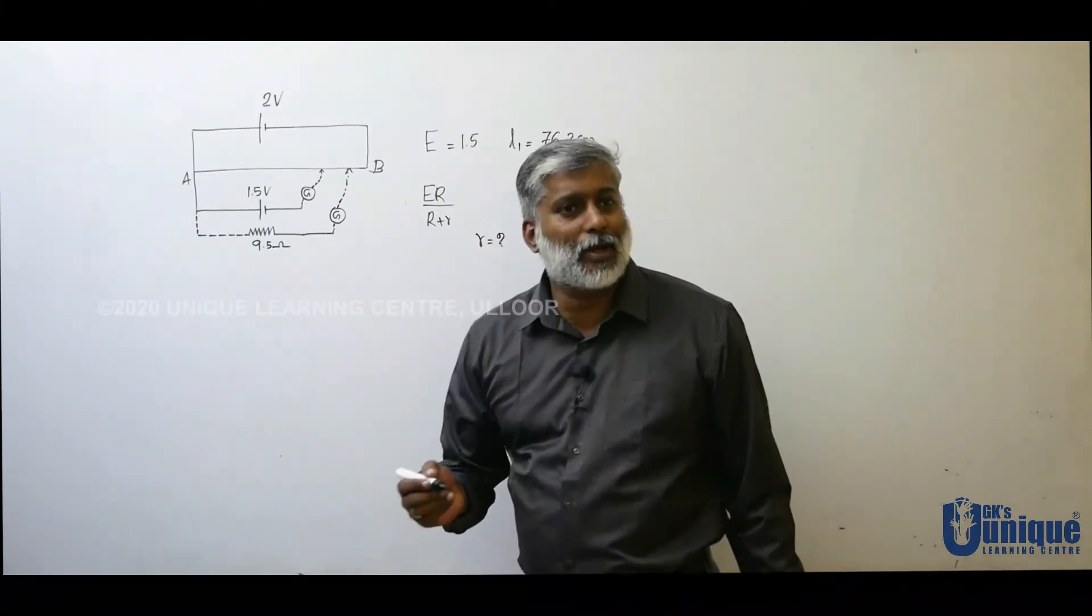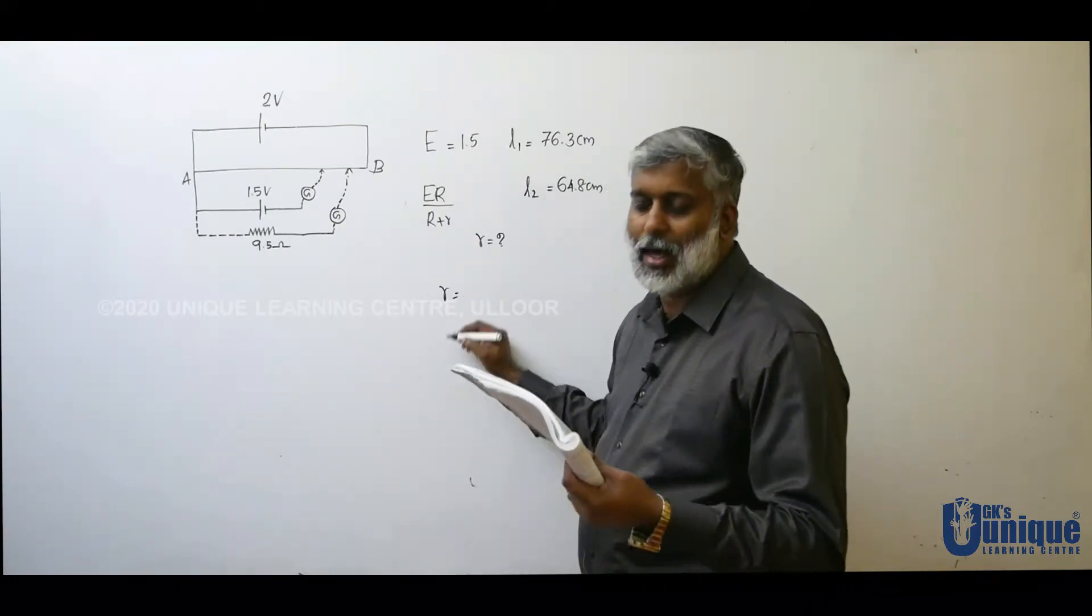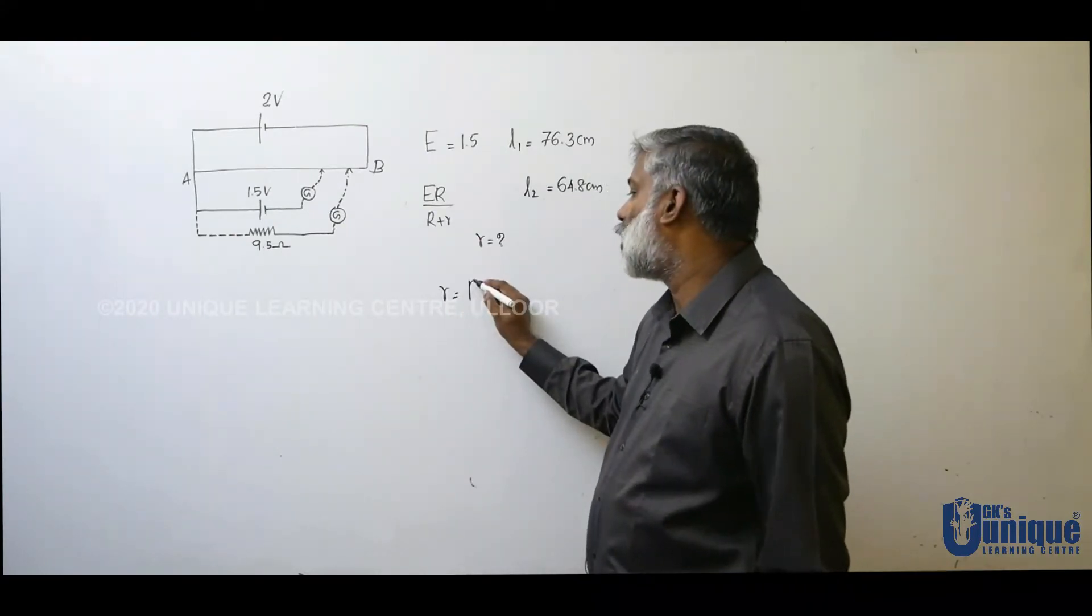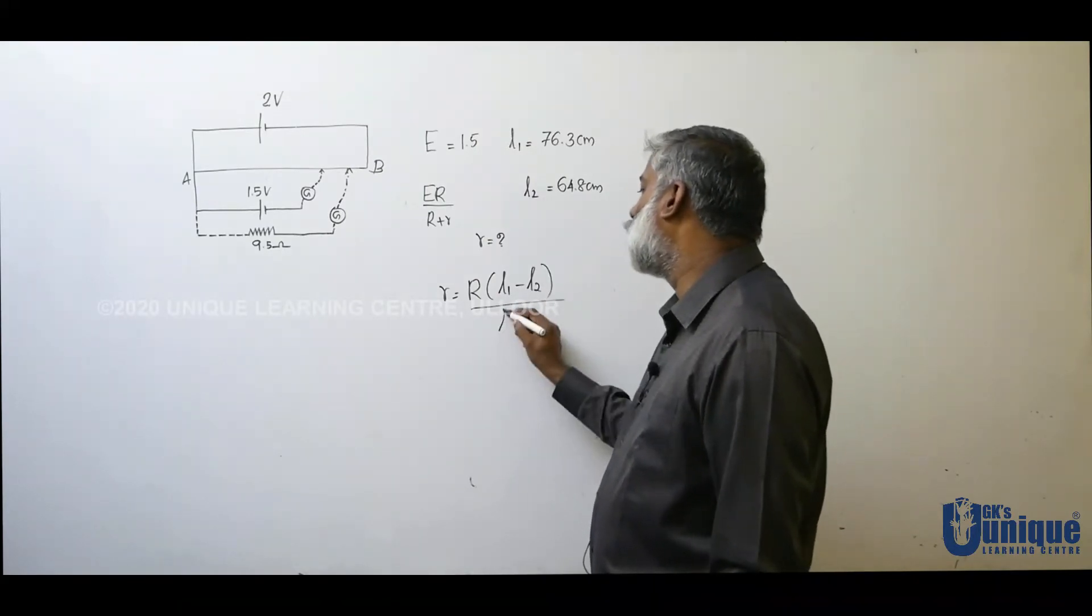Internal resistance is denoted by small r. From the equation, I am going to tell you what is r. Small r equal to R times L1 minus L2 divided by L2.